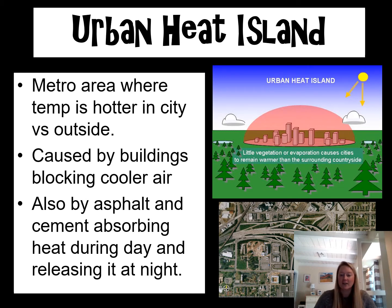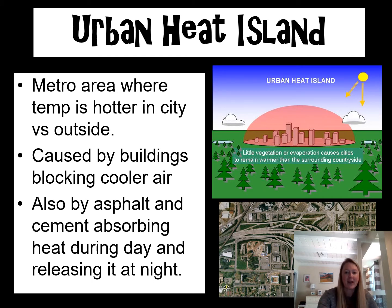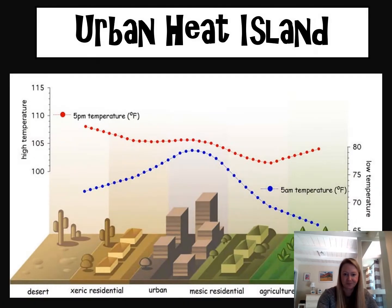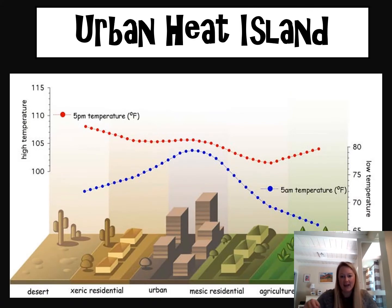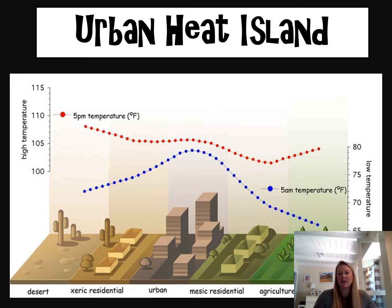In downtown Los Angeles, a lot of streets are asphalt and they're black — and black absorbs a lot of heat. Those are a couple of reasons why urban areas tend to be much warmer. Looking at this graph, you can see that over the course of a day, urban areas absorb much more heat than, say, a desert area — because desert areas don't have the same heat-absorbing materials that an urban city does.